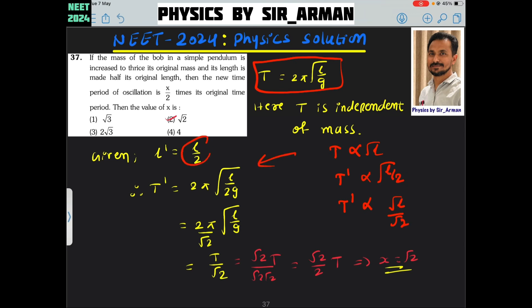But I have solved like this here. So l dash becomes l by 2. So t dash is 2 pi under root l by 2g. So just I have taken out this root 2 out of this. So it is 2 pi under root l by g. It is t by root 2.